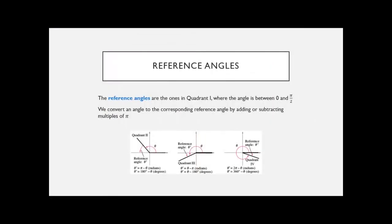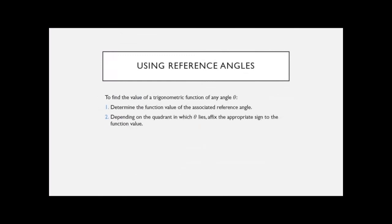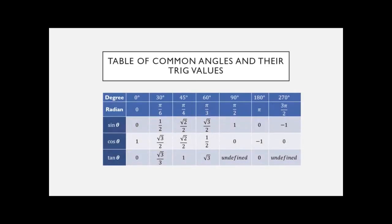We're going to use reference angles to find trig values of other angles, because then we can rely on basic trig functions. The reference angle is always taken in terms of the horizontal axis — you look at where your angle is and take the smallest distance from there to the horizontal. I don't memorize subtracting pi or 2 pi; I just look at the picture. We'll be using a table of common angles and their trig values in both degrees and radians — definitely keep that handy.